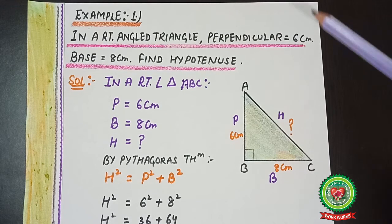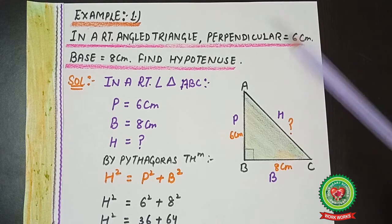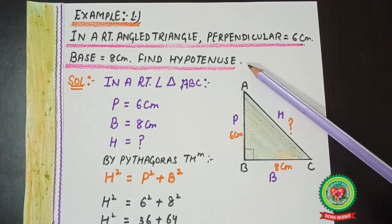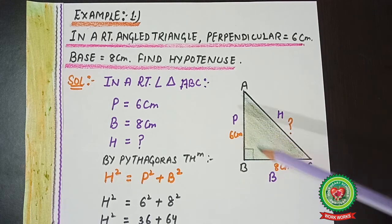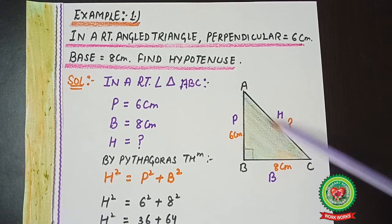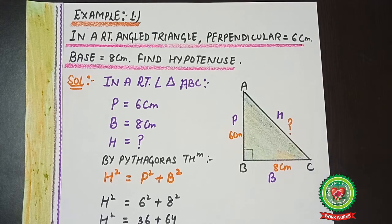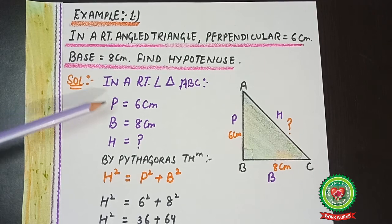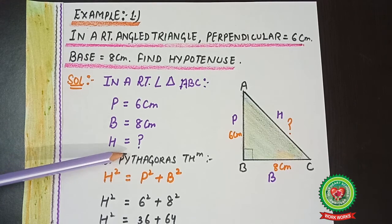Let's take example number one. In a right-angle triangle, perpendicular equals 6 centimeters and base equals 8 centimeters. Find the hypotenuse. We will draw the figure and name the triangle ABC, labeling the sides as capital B, capital P, and capital H — the longest side. Perpendicular and base are given, so we put those values in, and hypotenuse is what we need to find. In right-angle triangle ABC: P = 6 cm, B = 8 cm, H = ?